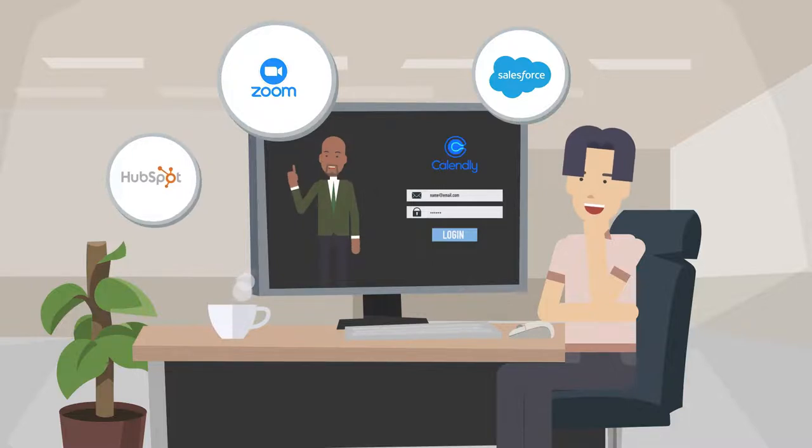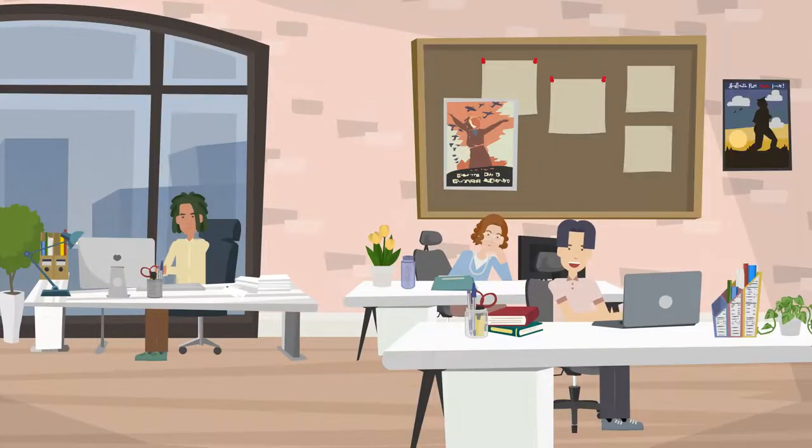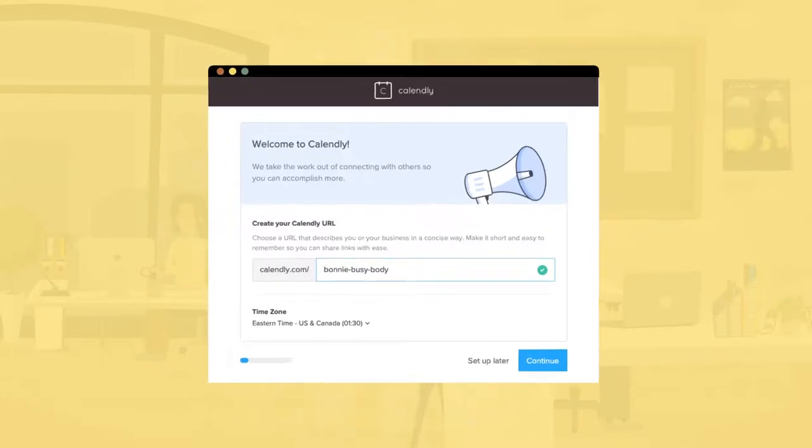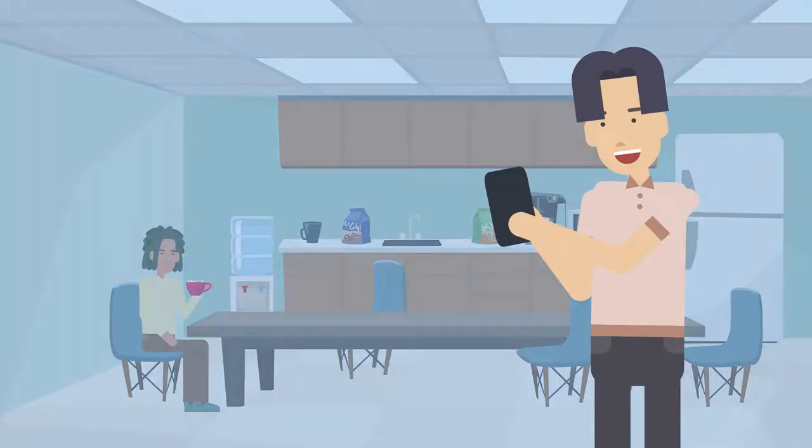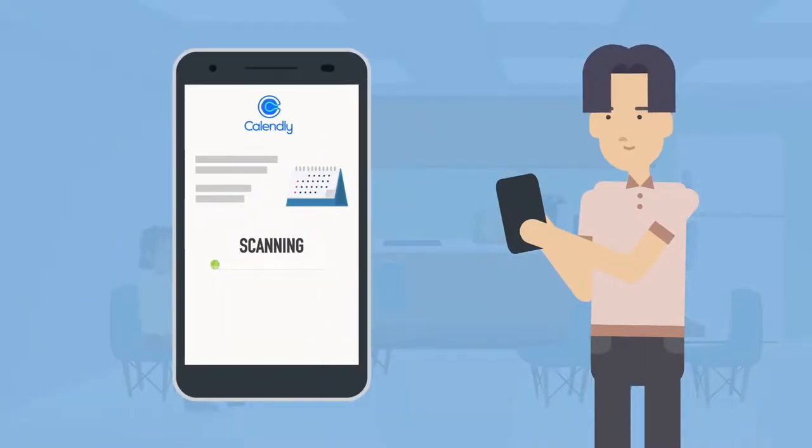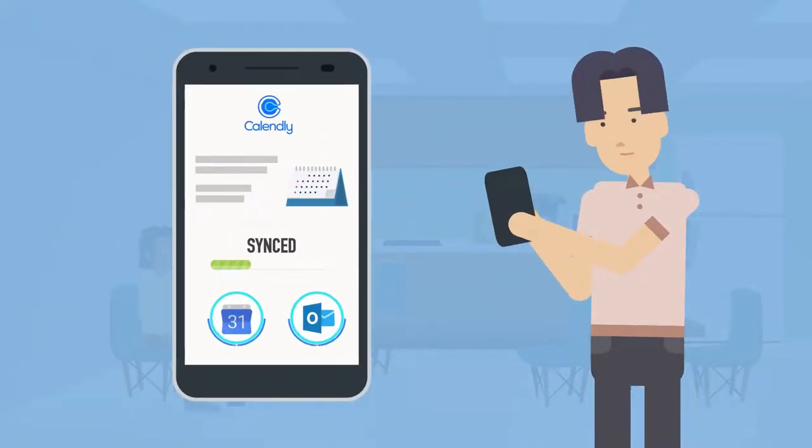Moreover, the product was just so easy to use compared to other alternatives. Calendly would display available time slots to invitees, and they could schedule a time with just one click. Then the appointment would be synced across all calendar apps such as Google Calendar and Outlook.